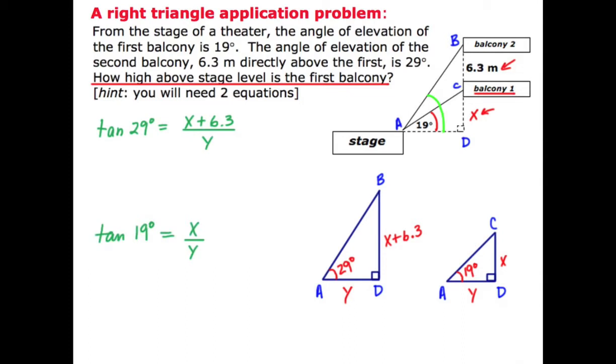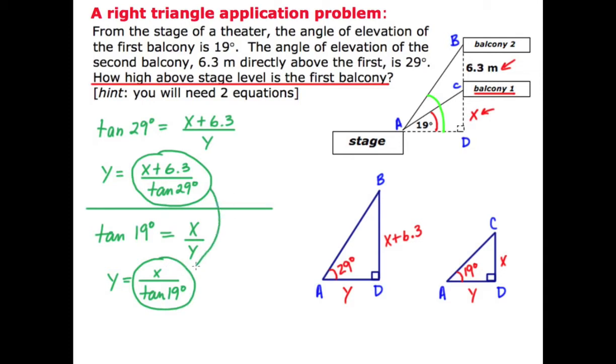So at this time I have my two tangent equations set up and what I'm going to do is solve for Y in both of them. So I've taken my two tangent equations and I've isolated Y in each case. Now in the first case we've got something equals Y and in the second case we have something else equaling Y. So what I can do at this time is set those two elements equal to each other.